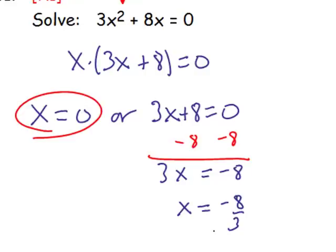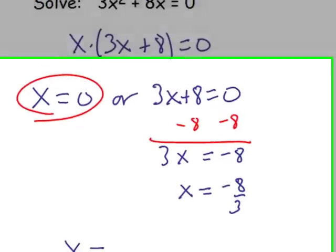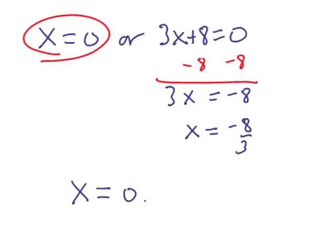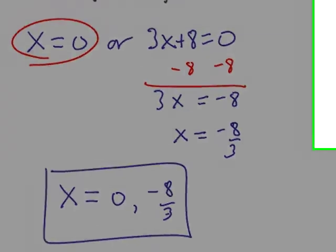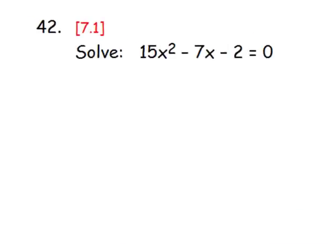Since we have two solutions, we put them together and say x equals 0, negative 8 thirds. In number 42, we must solve this equation, and this is a trinomial. We're going to have to use the factor game to factor it. Numbers 41 and 42 are called quadratic equations because they have that x squared term.